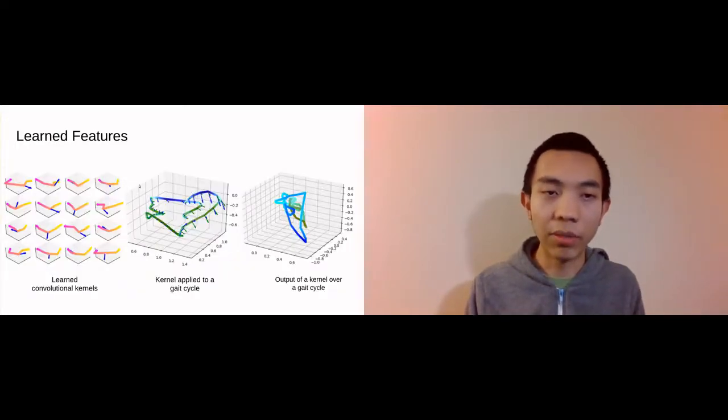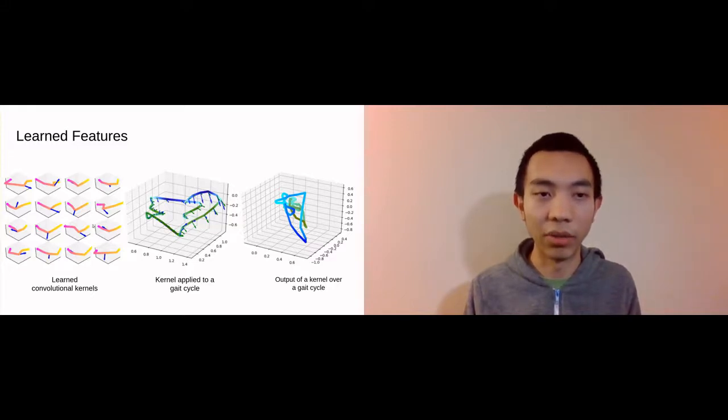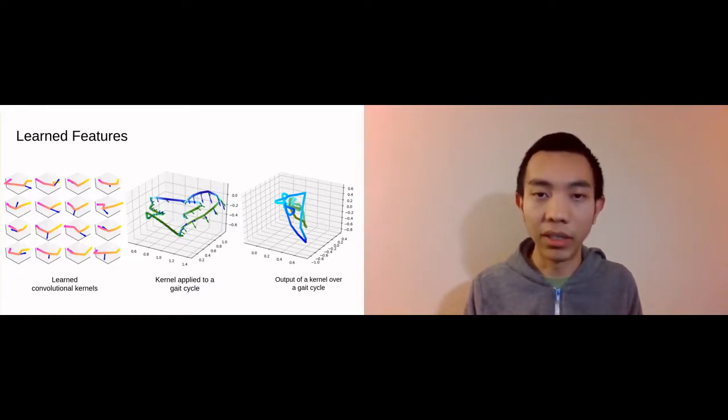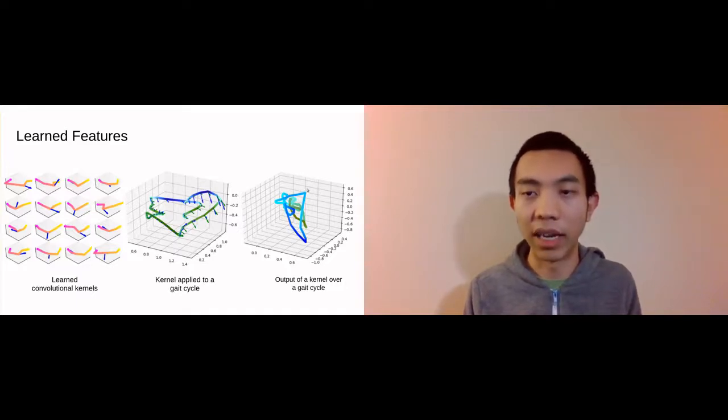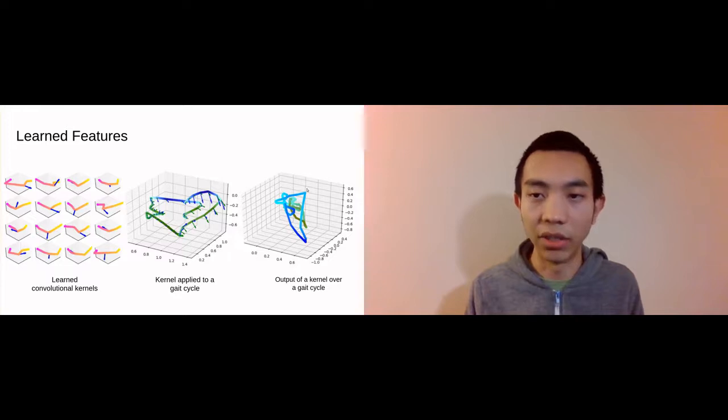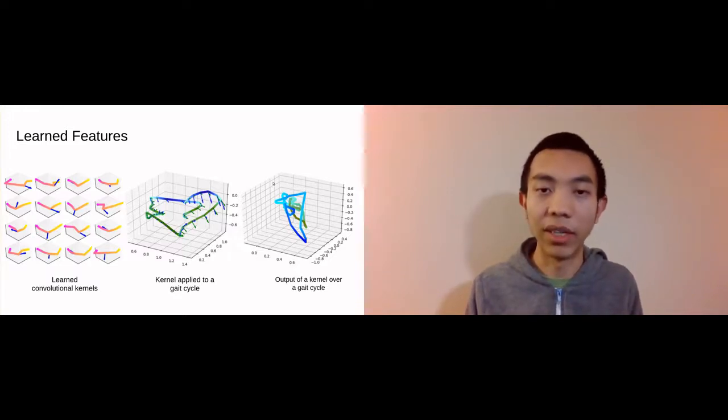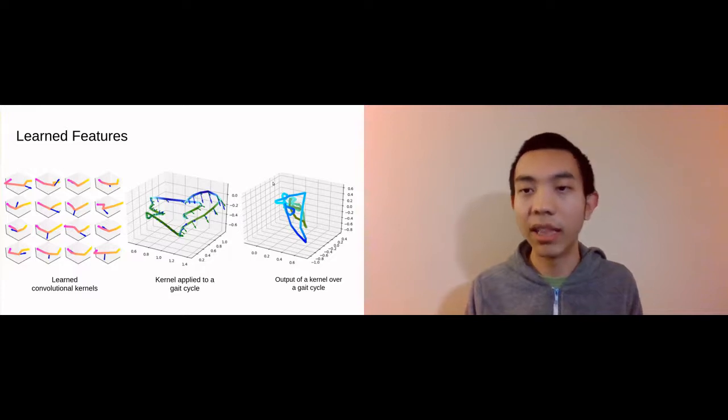The features learned by our architecture can be visualized as trajectory fragments in 3D Euclidean space shown at left. I've also illustrated the application of one of our kernels to an input gait cycle. The gait cycle in the middle is shown, and the output quaternion cycle that results from applying a kernel to the gait cycle is shown at right. These diagrams hopefully illustrate the unique nature of the input domain of gait cycles and the benefits of having an architecture specifically tailored for them.